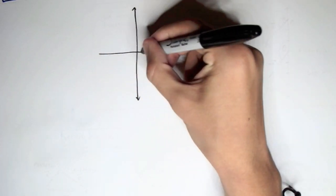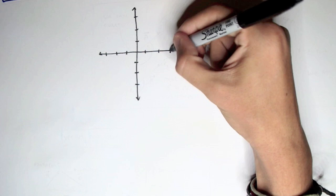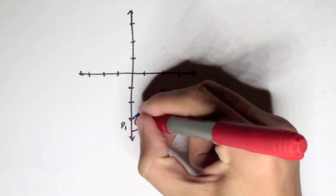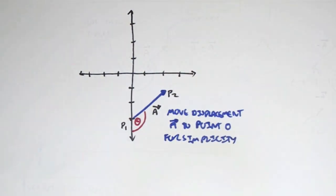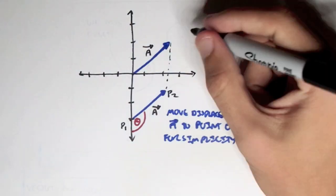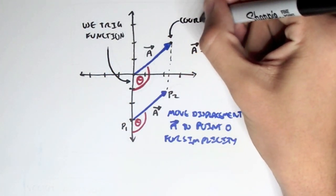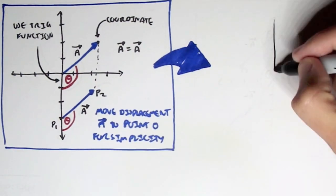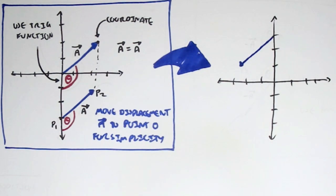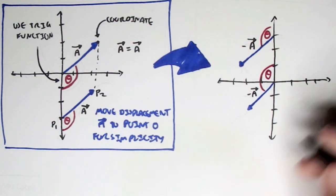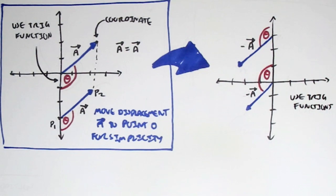Now let's look at how the equality of two vectors can help us solve problems. In an x-y graph, if we have a vector in the negative portion of the graph — here's point 1, point 2, and the displacement — and we want to find a particular angle, we can move displacement a to point 0 for simplicity, because it's exactly the same vector. Then we can calculate the angle using some trig function. Interestingly, the endpoint is actually a coordinate. Similarly, for a vector traveling in the negative x direction, move the whole displacement down to point 0 from the start, and we can easily find the angle using trig functions, given we know some values.